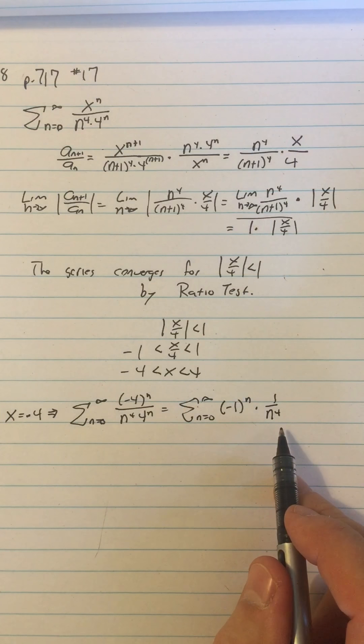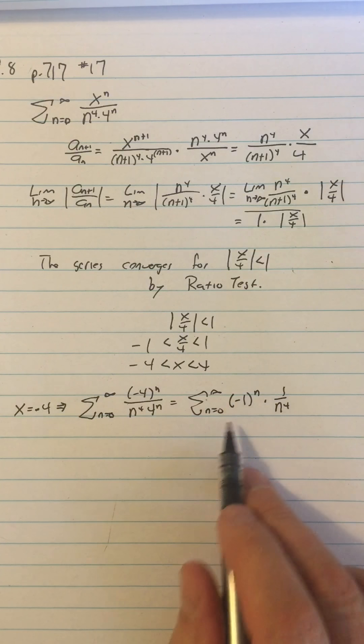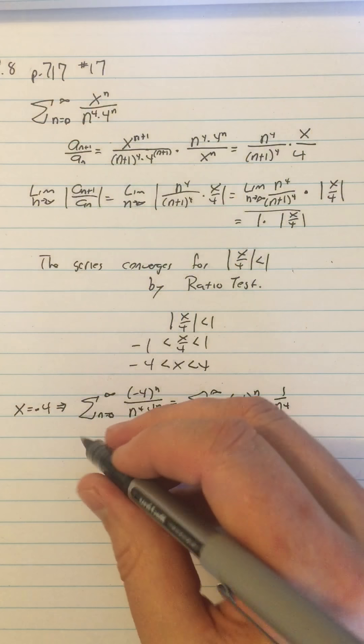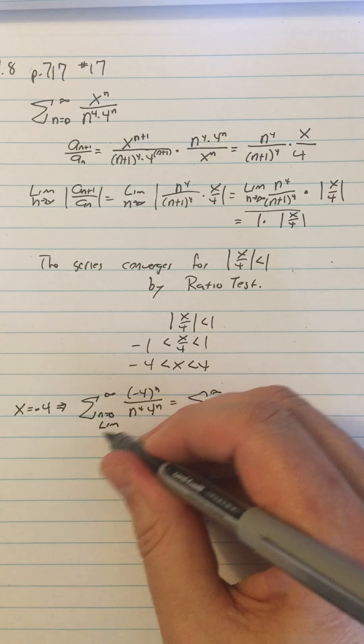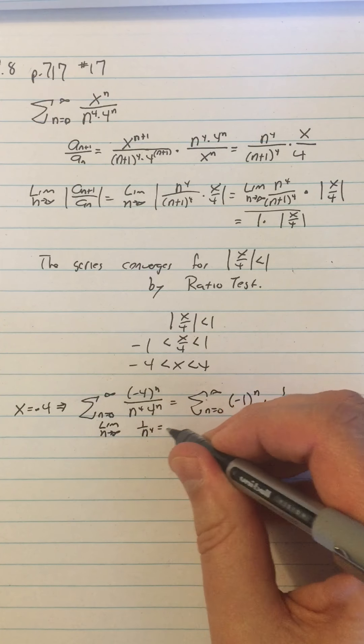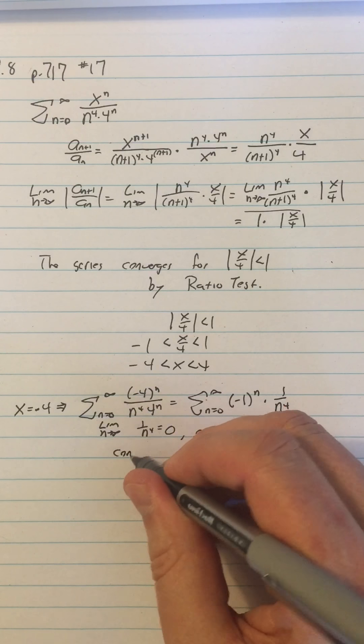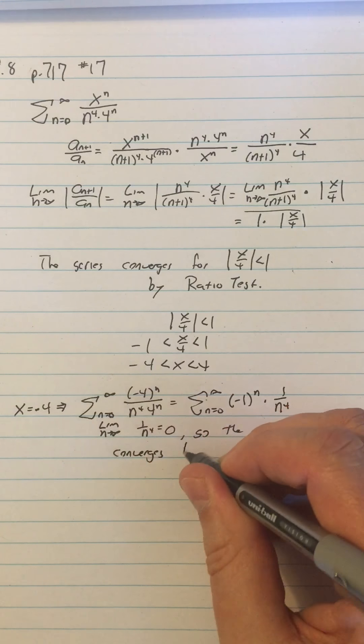Now this is an alternating series, so I don't want to talk about it being a p-series because it's an alternating series. So I should use alternating series test. So I can say limit as n approaches infinity of 1 over n to the fourth equals 0. So the series converges by the alternating series test, and I have to cite that.